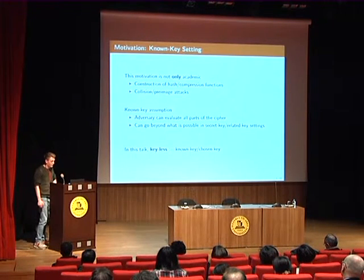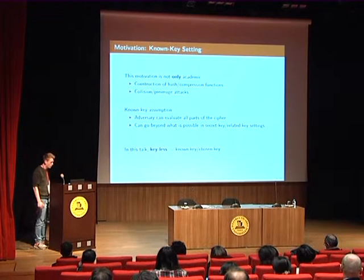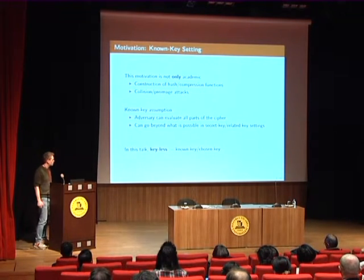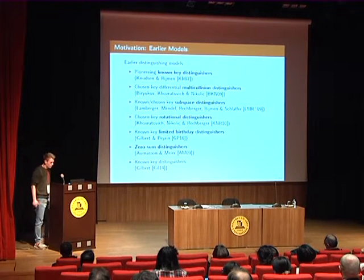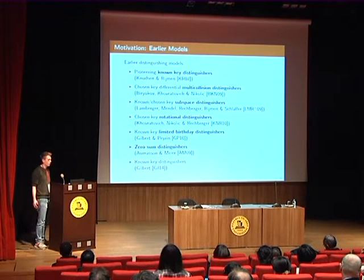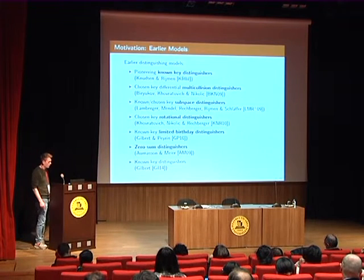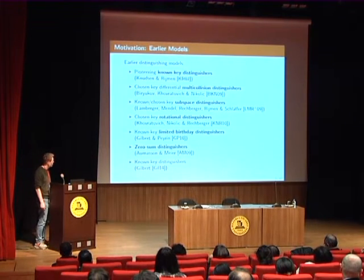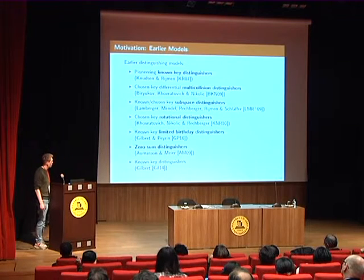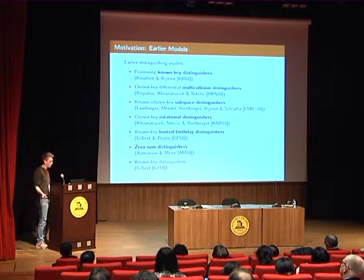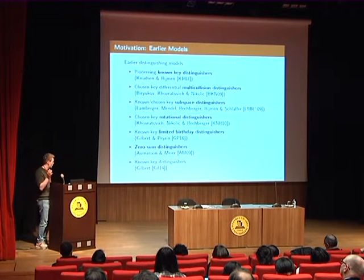Whenever I say the word keyless, I will mean either the known-key setting or the chosen-key setting. Some people also call this the open-key setting. Looking at some earlier models for distinguishing primitives in either the known-key or chosen-key setting, we have the pioneering work by Knudsen and Rijmen from 2007 from AsiaCrypt, where they do known-key distinguishers on AES and other primitives. Then we have multi-collision distinguishers in the chosen-key setting, subspace distinguishers, chosen-key rotational distinguishers, limited birthday distinguishers, and zero-sum distinguishers.